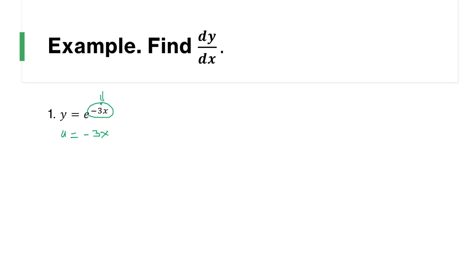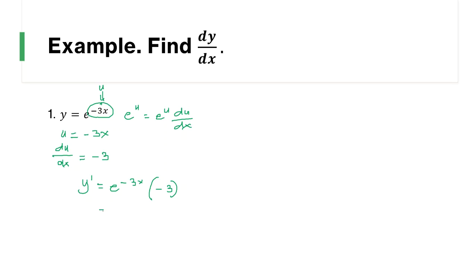If this is our u, our expression becomes e^u. The derivative of e^u is e^u itself times the derivative of u with respect to x, so we need to find du/dx. du/dx = negative 3. Therefore, dy/dx = e^(-3x) times negative 3, which simplifies to negative 3·e^(-3x). This is our final answer.